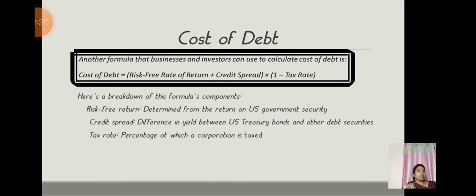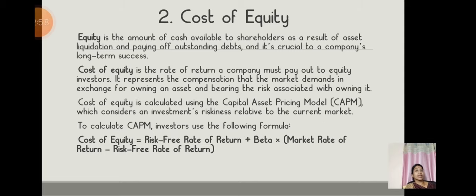The formula is given here. Cost of Debt = (Risk-Free Rate of Return + Credit Spread) × (1 − Tax Rate). This formula breaks down into: risk-free return determined from the return on US government securities; credit spread — the difference in yield between US Treasury bonds and other debt securities; and tax rate — the percentage at which a corporation is taxed.